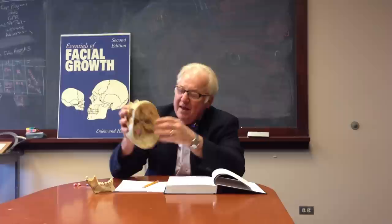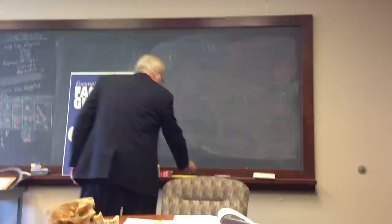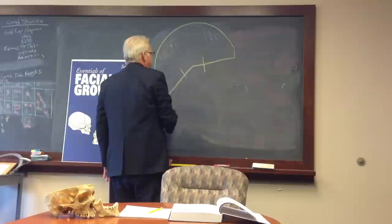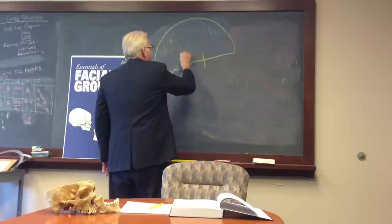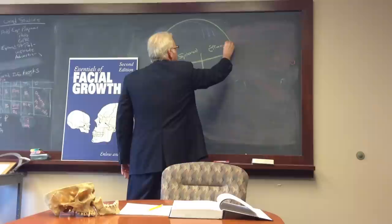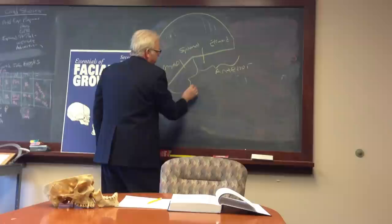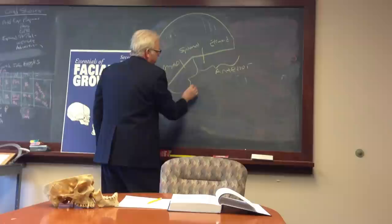What does that mean in terms of growth and development? Let me go to the board to illustrate. Now we talked about the cranium before. Now I want to focus on this cranial base. There's a cranial base, and as I said, it has three parts: the occipital portion, the sphenoid portion, and the ethmoid portion. This part is referred to as the anterior cranial base, and the part from the pituitary fossa back is often referred to as the posterior cranial base.